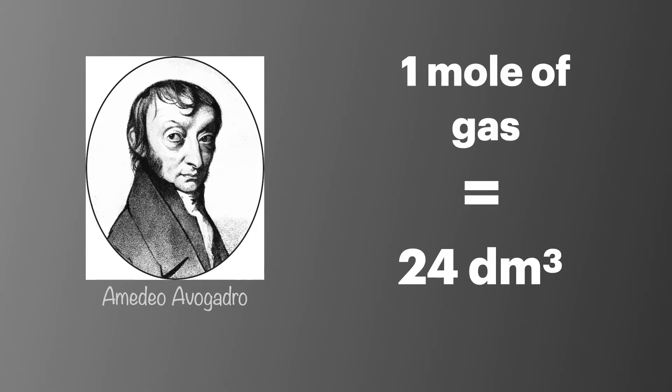Amadeo Avogadro, who you might be familiar with for the constant which is named after him, discovered that one mole of gas at 25 degrees Celsius and 100 kilopascals would occupy 24 decimeters cubed. This gives us the simplest relationship of moles linked to the volume of a gas.